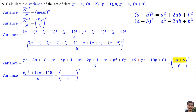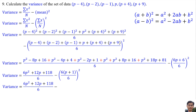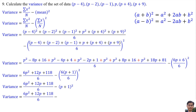Then we factorize 6P plus 6, then simplify this expression, then expand this expression using the formula. Then we change the denominator of the expression to 6. The denominator of this expression is 1, so to change it to 6, every term needs to multiply by 6.